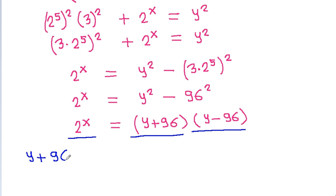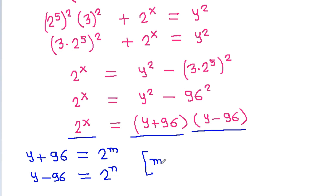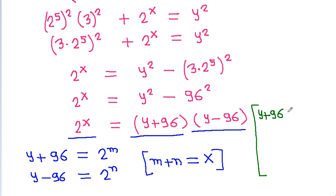Suppose y plus 96 equals 2^m and y minus 96 equals 2^n. Then m plus n should equal x. Also, since y plus 96 is greater than y minus 96, we have 2^m greater than 2^n, so m must be greater than n.